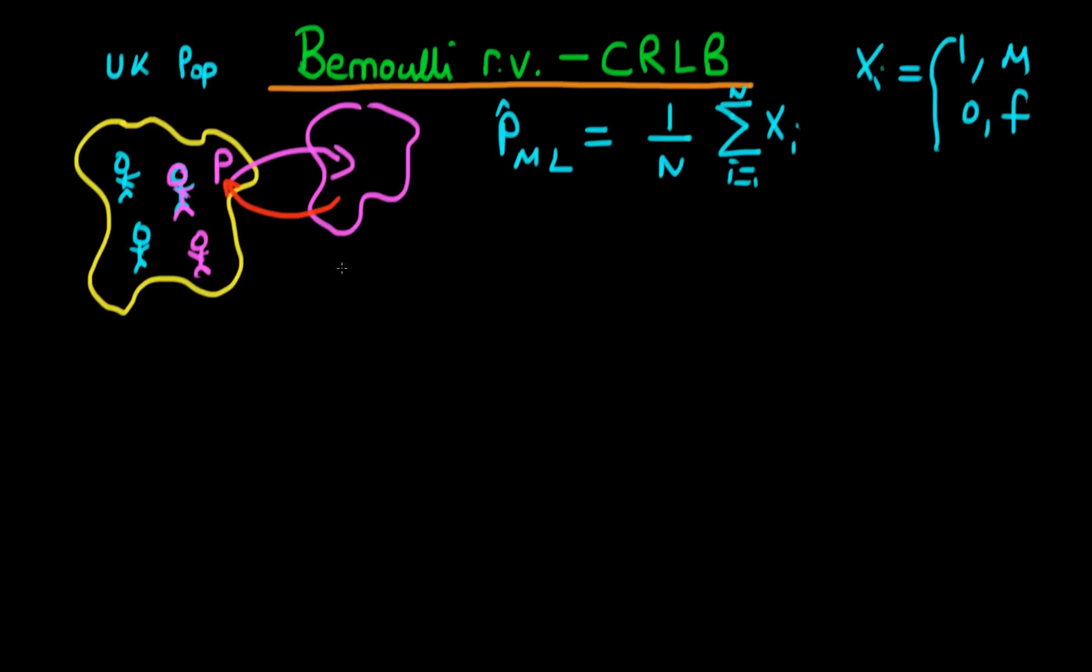And also in that particular video, as a part to deriving this maximum likelihood estimator for the probability P, we actually worked out the derivative of the log likelihood with respect to P. And it was equal to N X bar divided by P minus N times one minus X bar divided by one minus P. Okay, so this is what we got to in the last video.